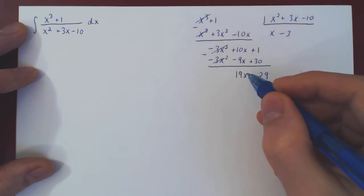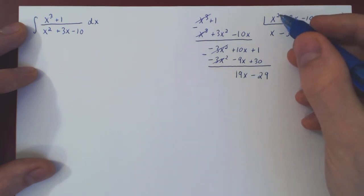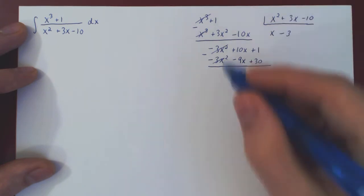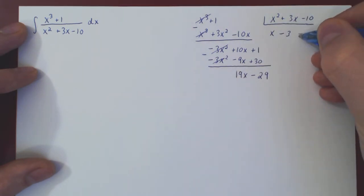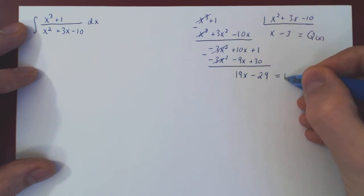Now we have a degree 1 polynomial, and here we have degree 2. As 1 is strictly less than 2, this completes our long division. This is the quotient of the long division. This is the remainder.